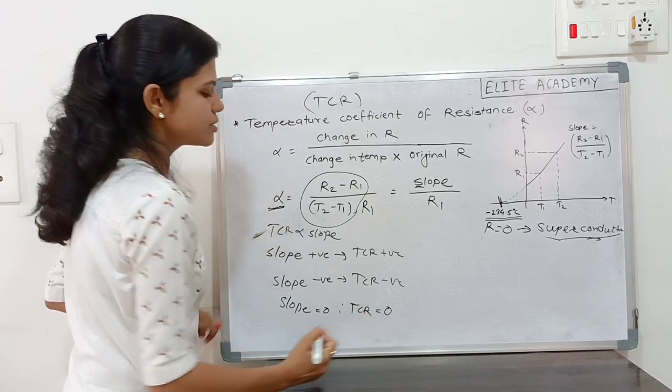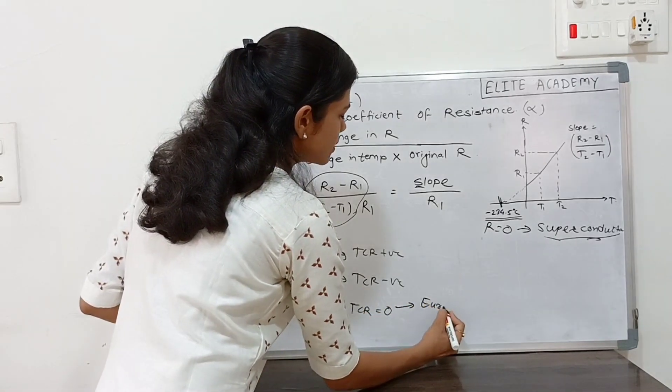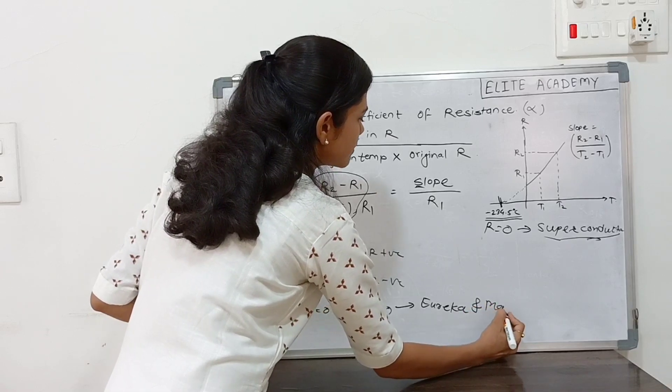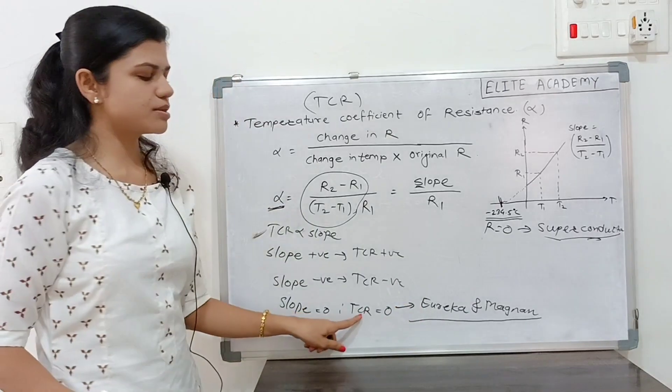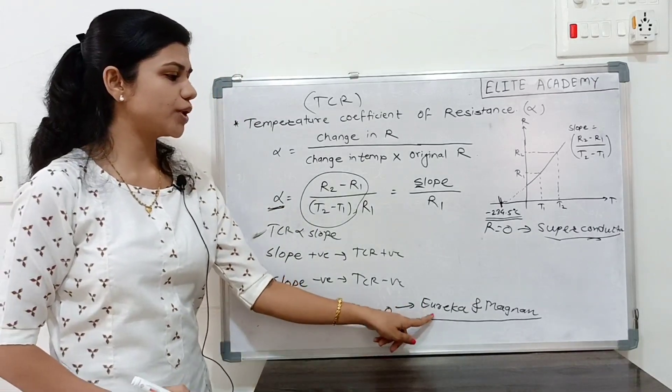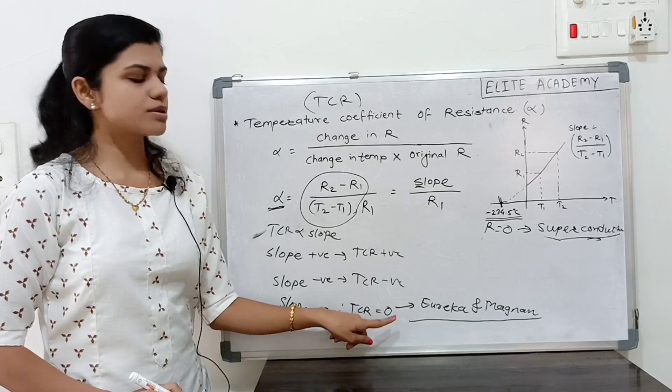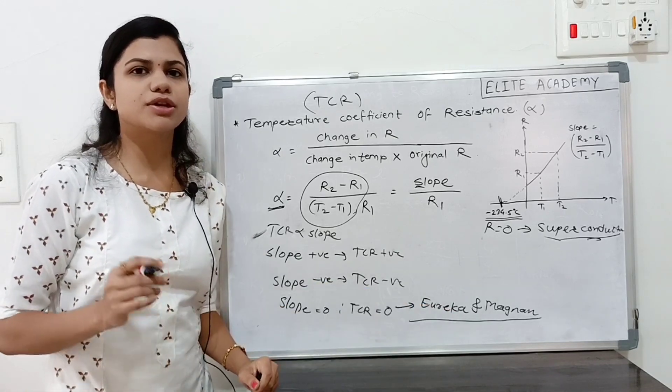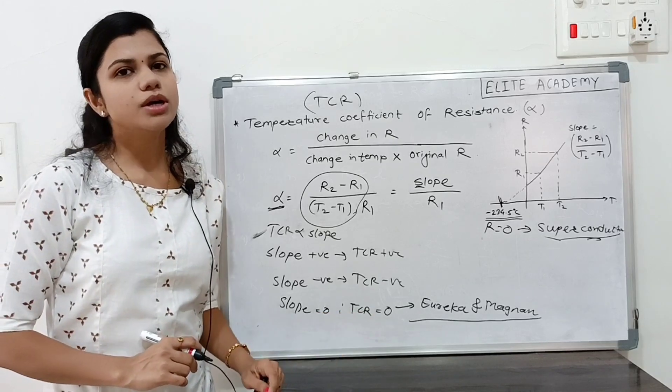And this is mostly for the materials Eureka and Magnul. These materials having TCR is equal to 0. Remember Eureka and Magnol having a TCR 0 because these materials are using for the measuring instruments and there we require the TCR is equal to 0.